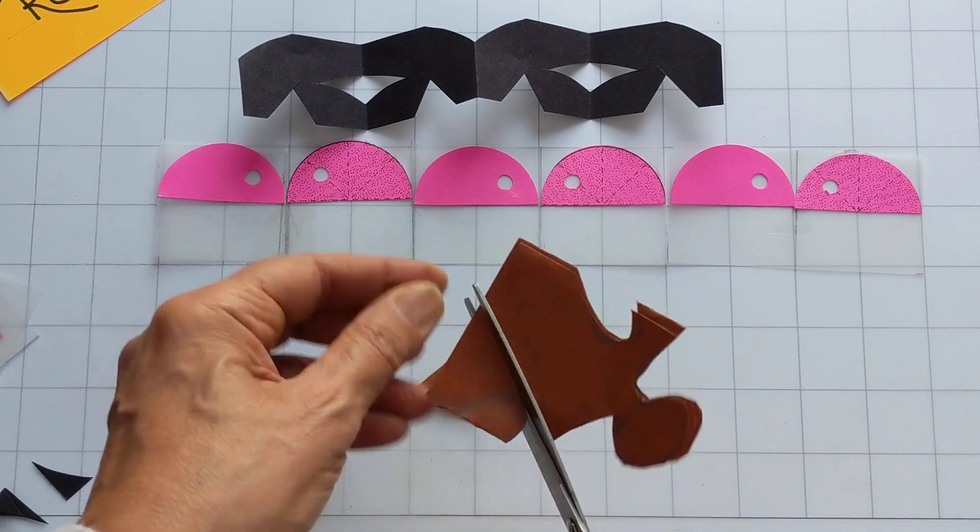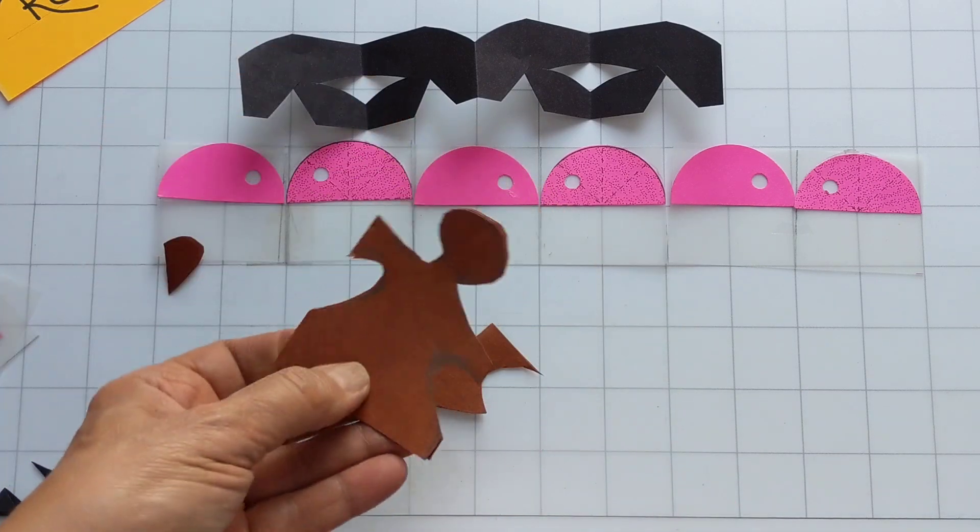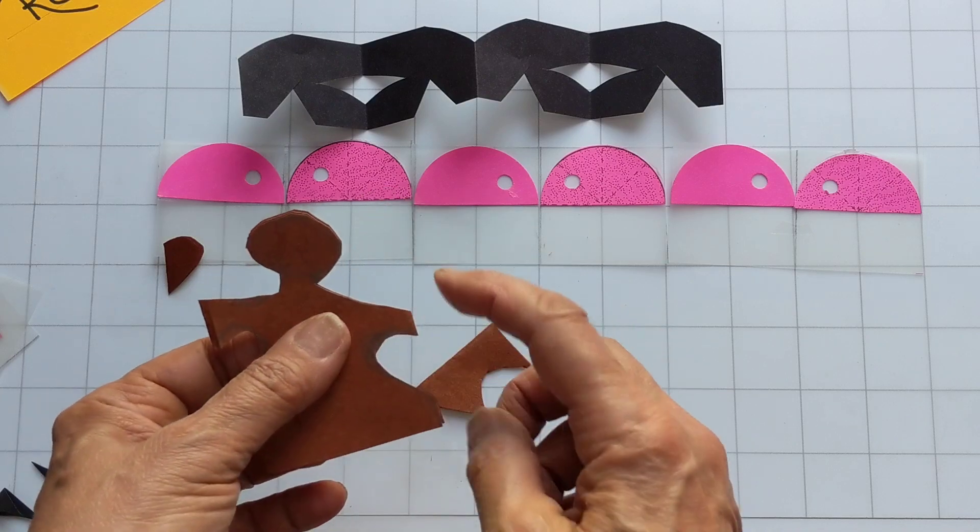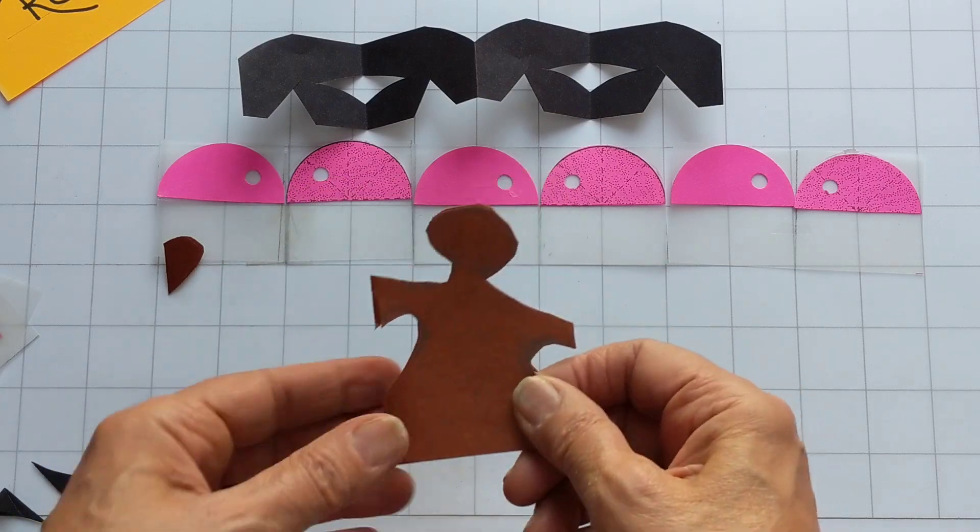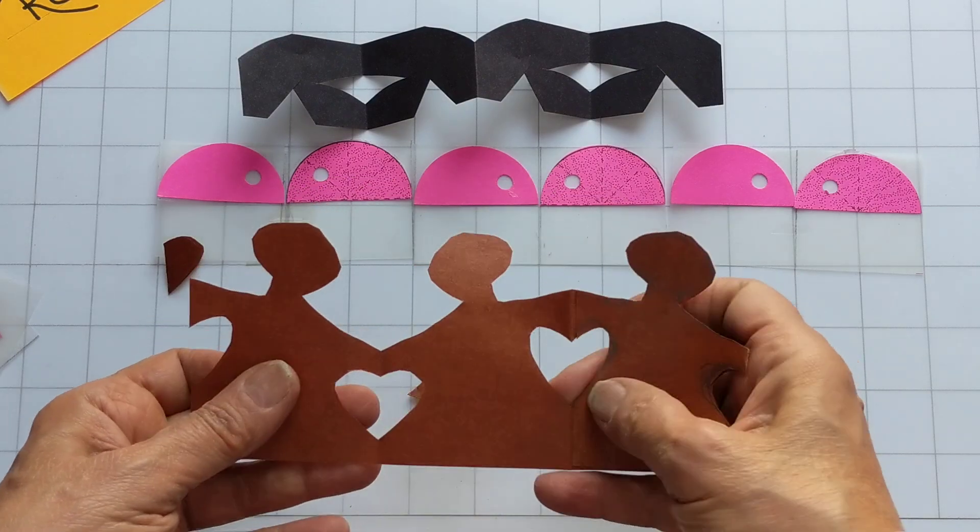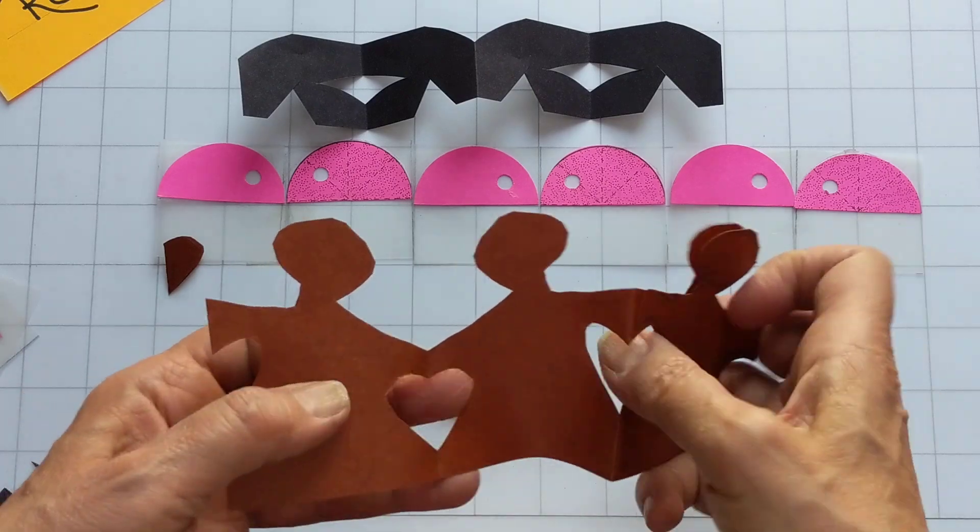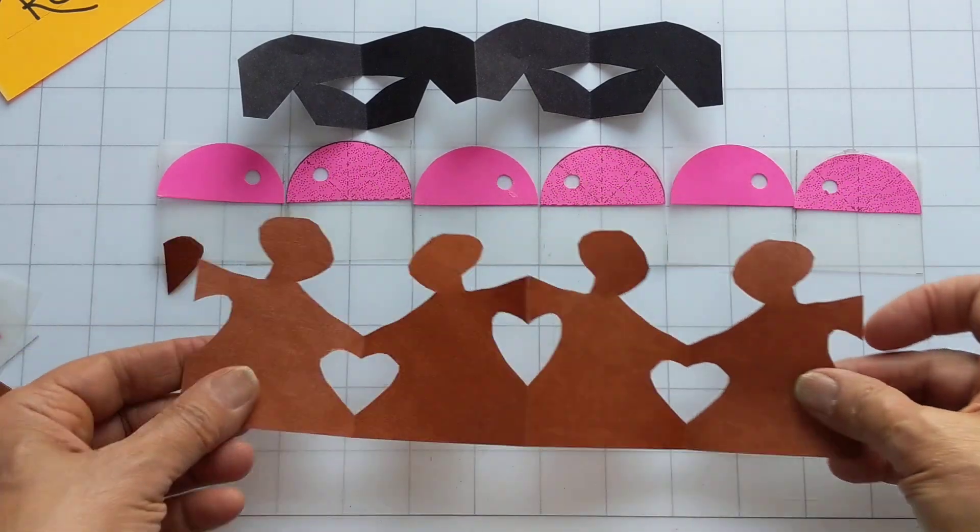So here's my paper doll. Remember, when you're making paper dolls, you need to keep areas on the sides from being cut so they stay together. And there's my vertical reflection paper dolls.